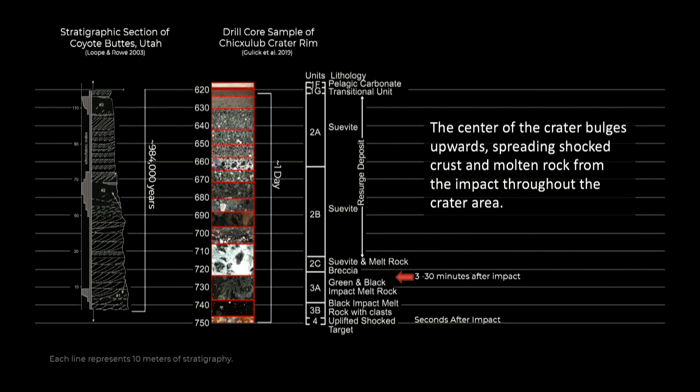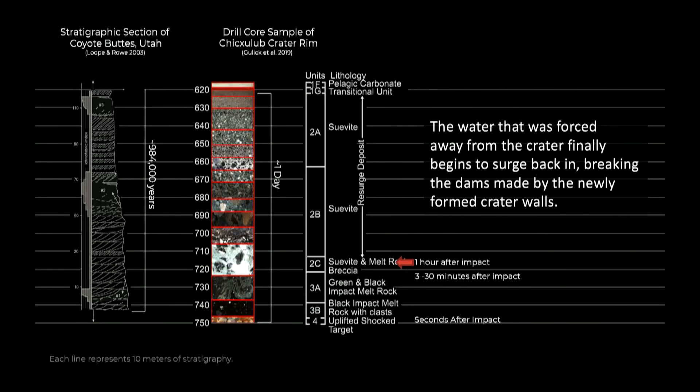And so I'm just going to keep going. The center of the crater bubbles upward. You've seen that when things, you know, and then you get the uplift from the center. Spreading shocked crust and molten rock from the impact throughout the crater area. So there's this big rebound of stuff that comes up. And that's in that next, boy, about, looks like about 30 meters of the core.